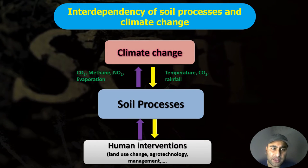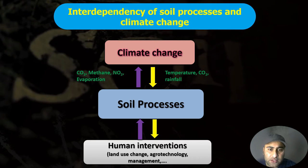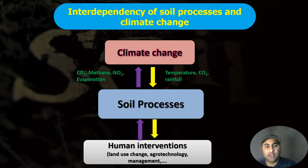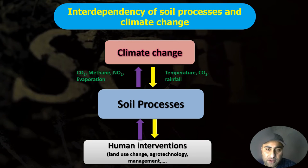Climate change, induced by carbon dioxide, methane, and nitrous oxide concentrations, is directly related to soil processes. In soil, organic material undergoes decomposition, paddy is grown, fertilizers are used, and such processes emit these gases into the atmosphere. In return, the atmosphere gives back increased temperature, CO2, and altered rainfall to the soil. When human-induced climate change increases greenhouse gas concentrations through various technologies and land use changes, these soil processes get hampered.